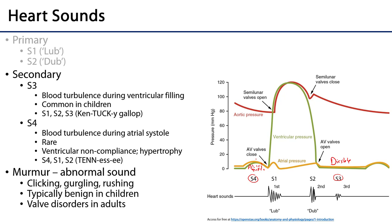S3 is a very common sound heard in children and is generally quite benign. The order S1, S2, S3 has a cadence to it called a gallop. Oftentimes people refer to it as a Kentucky gallop because the cadence of the word 'Kentucky' explains the cadence of those sounds — that is how the S3 sound blends in with S1 and S2.